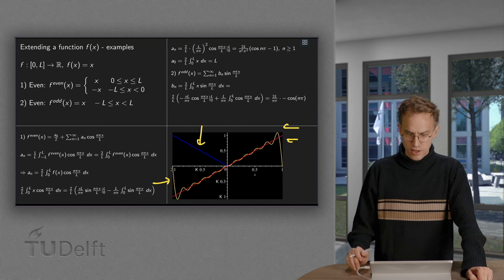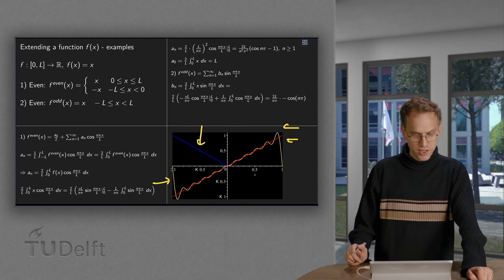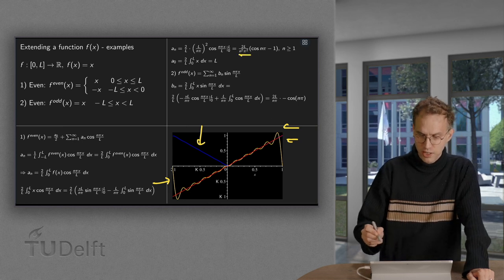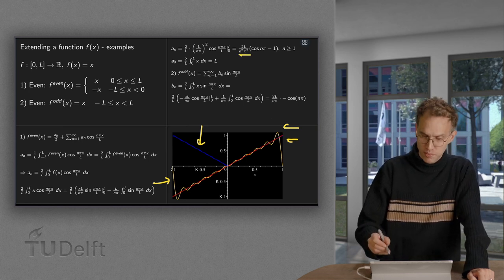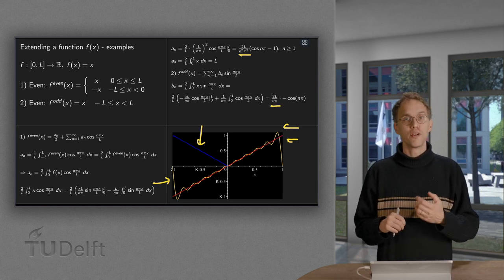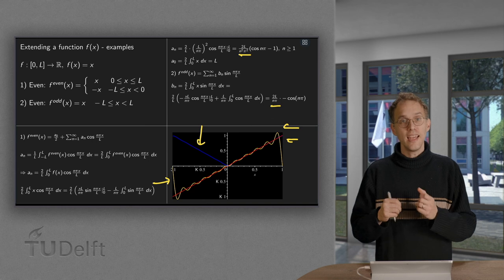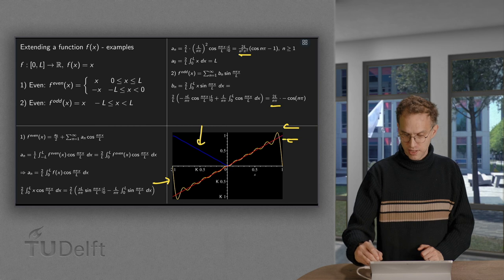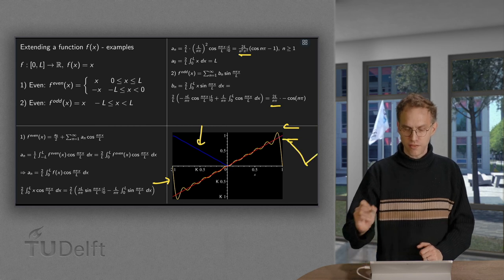So why does the blue one converge faster in this case? Well, you can see it from the terms, which go as 1 over n squared, whereas the terms of the b_n goes just like 1 over n, so that will go slower. And furthermore, the even extension of f of x is continuous. If you continue, it looks like this, and so forth.